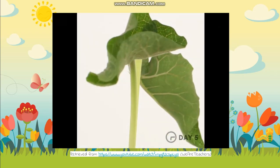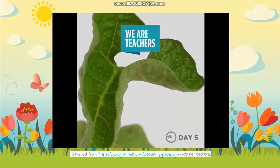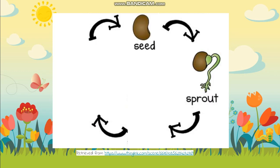It keeps growing until it becomes a plant. So for our life cycle, just like we grow from a little baby to a grown-up, these plants also start from the little baby — and we call that the seed. Then they will start to become a sprout, and you will see little roots start to come out of the seed.